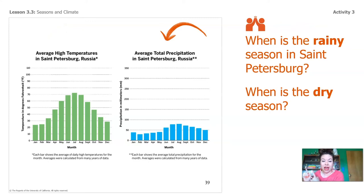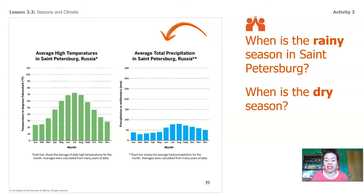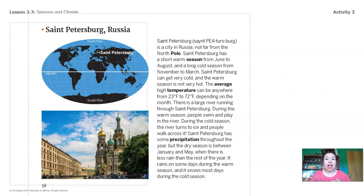Now let's look at the blue graph — we're talking about total rainfall or total precipitation. When is the rainy season in St. Petersburg? The months when you see the bars go up are June, July, August, September. When is the dry season? January, February, March — those are the months when there's less rain, so we would consider that the dry season. Now we know when the warm and cold season are, and we know when the wet and dry season are in St. Petersburg. Take a look at this reading — we're about to read about St. Petersburg, Russia.